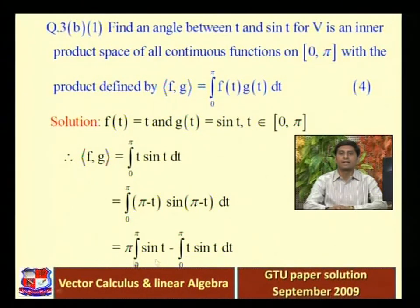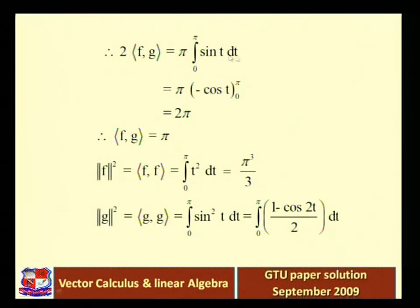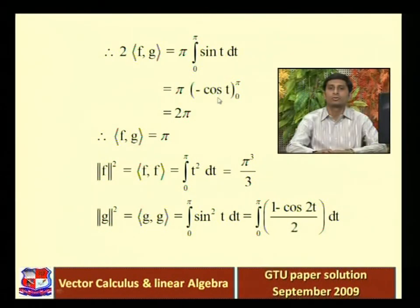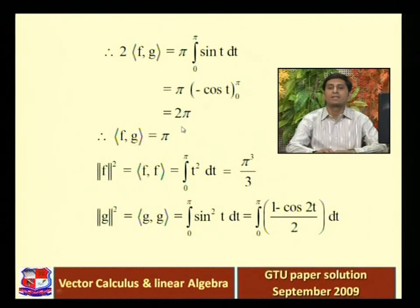Two times inner product <f,g> equals π times ∫₀^π sin(t) dt. The integral of sin(t) is −cos(t), evaluated from 0 to π: −cos(π) − (−cos(0)) = 1 + 1 = 2. So 2<f,g> = 2π, therefore <f,g> = π.